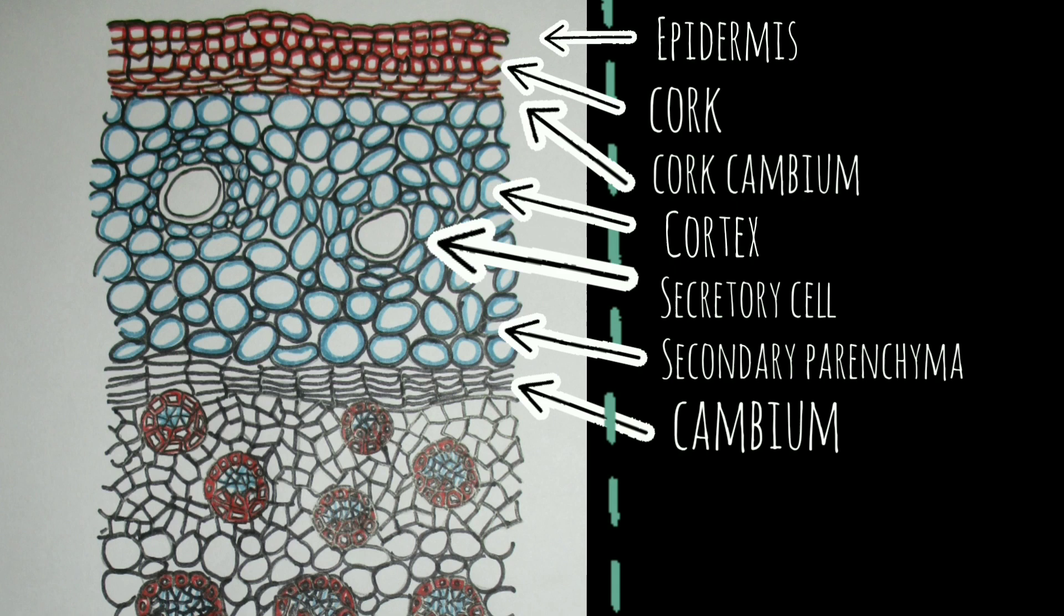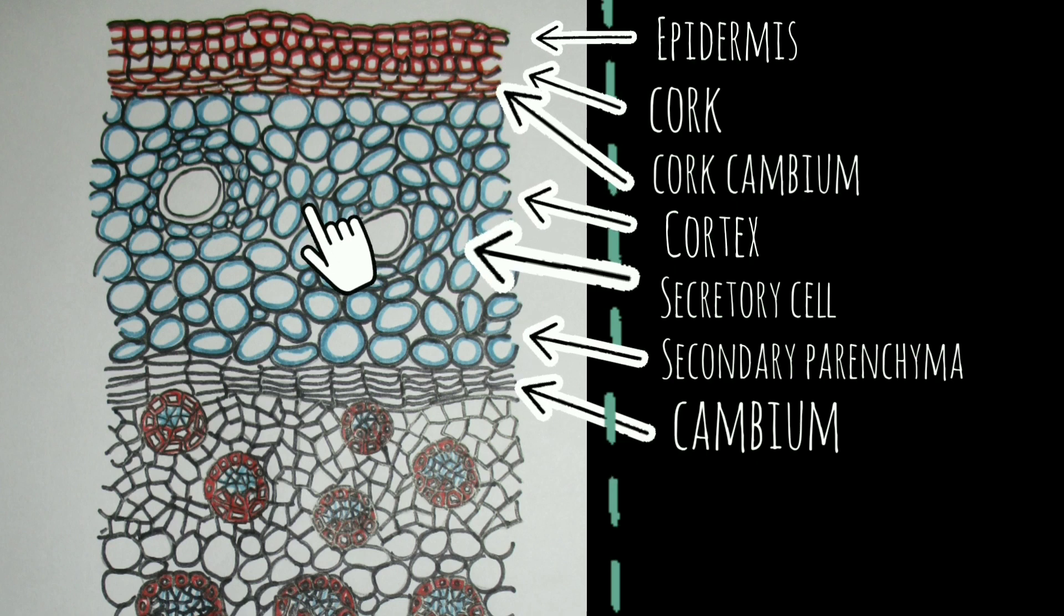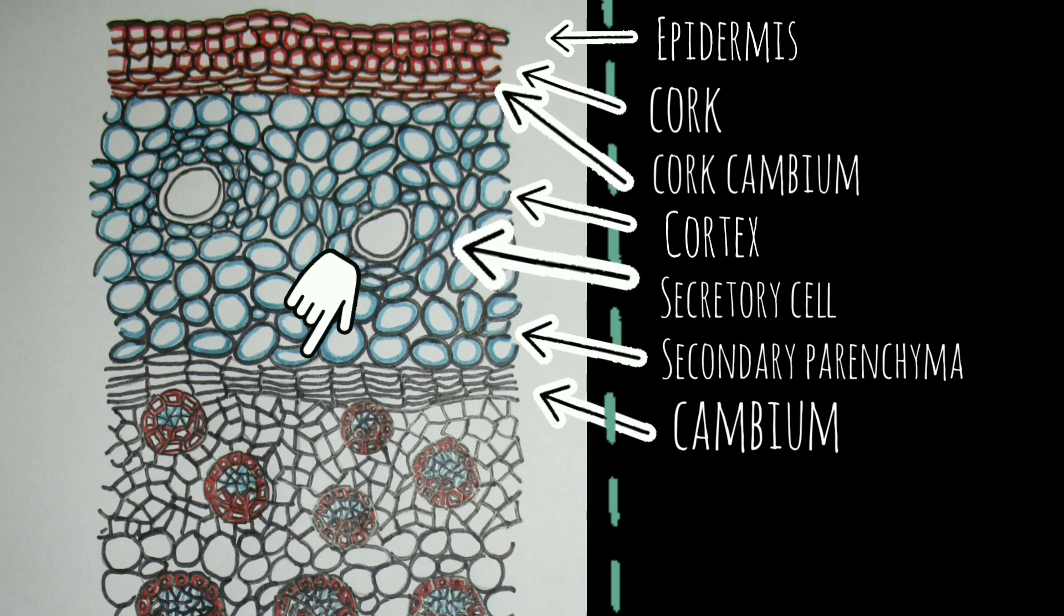This is the single-layered ruptured epidermis here and there, and it is cortex, which is mostly parenchymatous, externally bounded by three to five layers of cork cells as I already said, and internally by a cambial layer which produces conjunctive tissues.